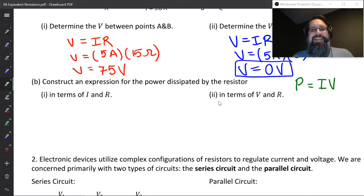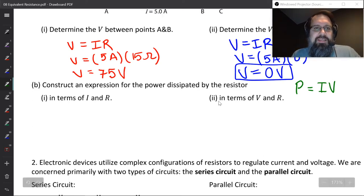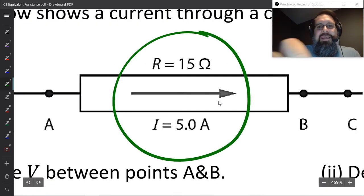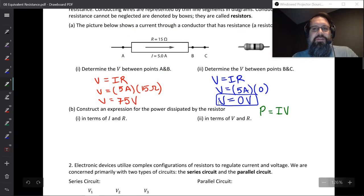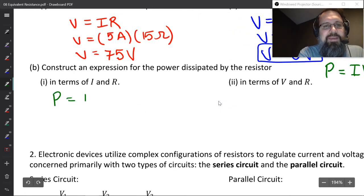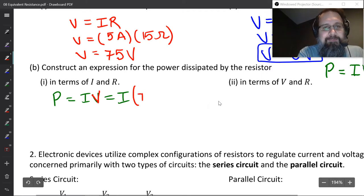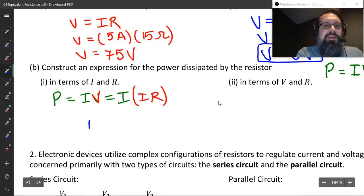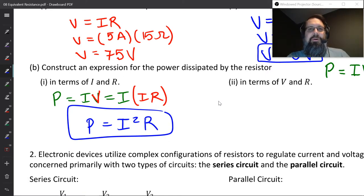Power equals current times potential difference — P equals IV. Now I want to know the power in terms of I and R, not V. If P equals IV and V is equal to IR, then we can substitute and get a new equation: power is equal to I squared R. That's a perfectly valid equation for a resistor — if you want to find the power being dissipated, you can take the current squared times the resistance. The current was 5, squared gives 25, so power is 25 times 15. And 5 times 75 equals 25 times 15, confirming these are equivalent.